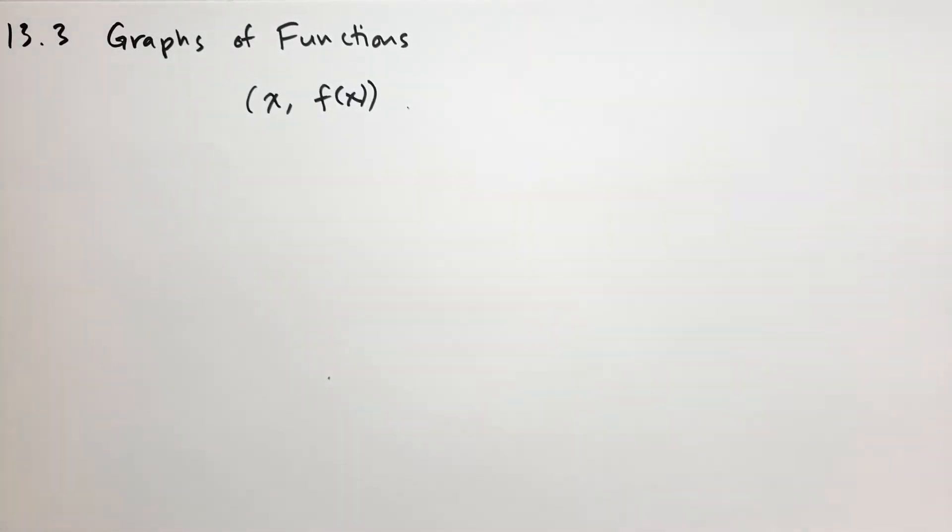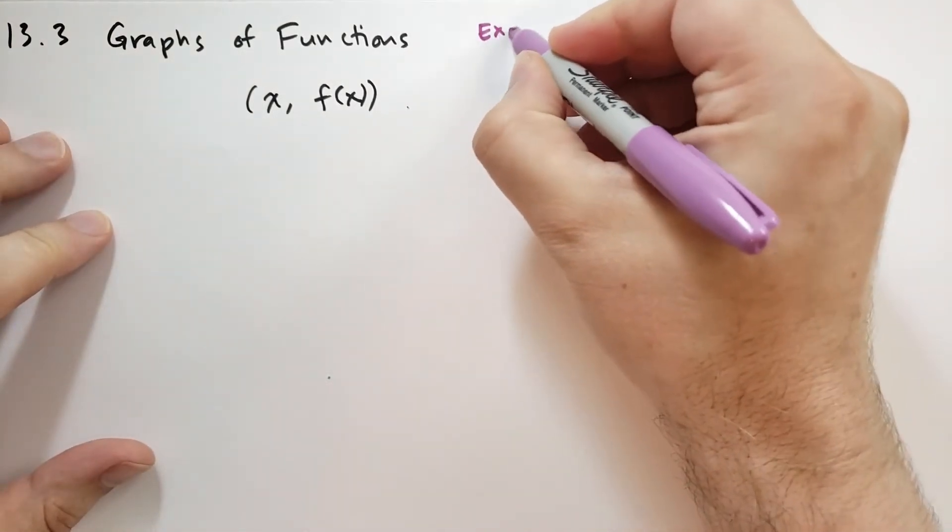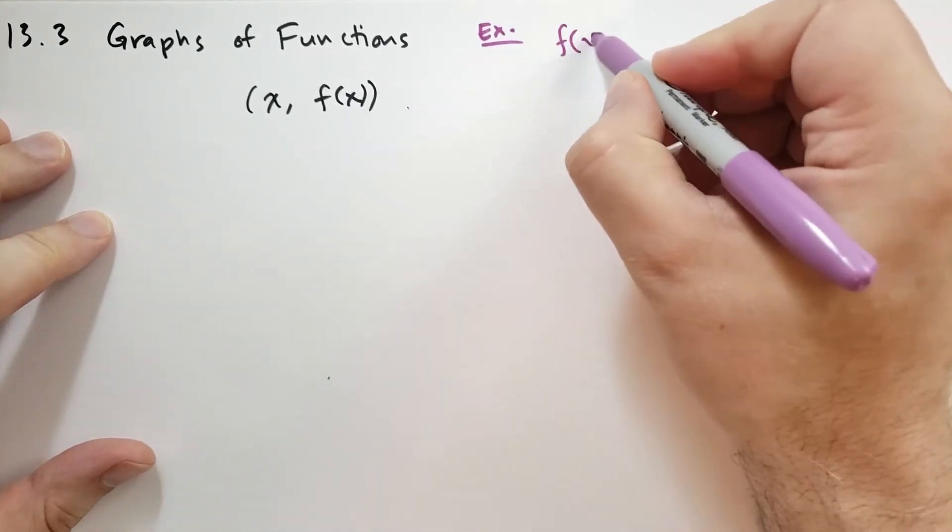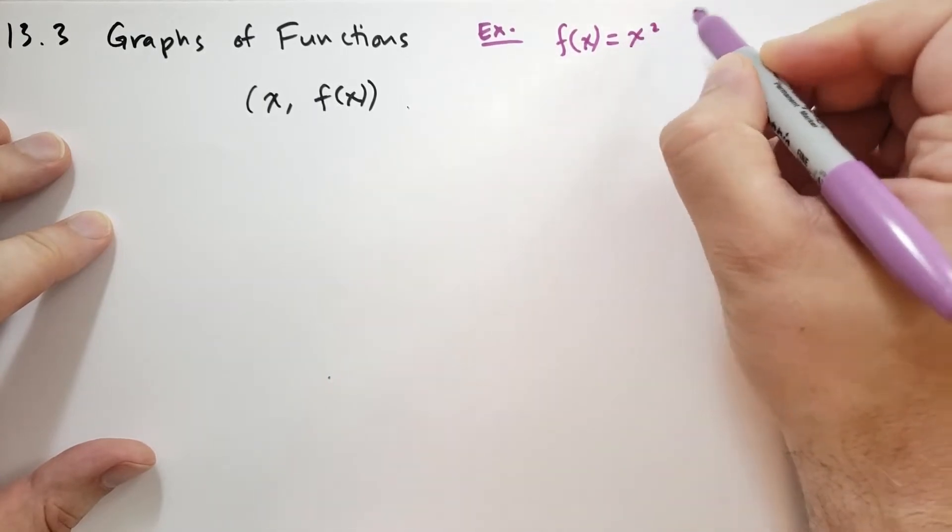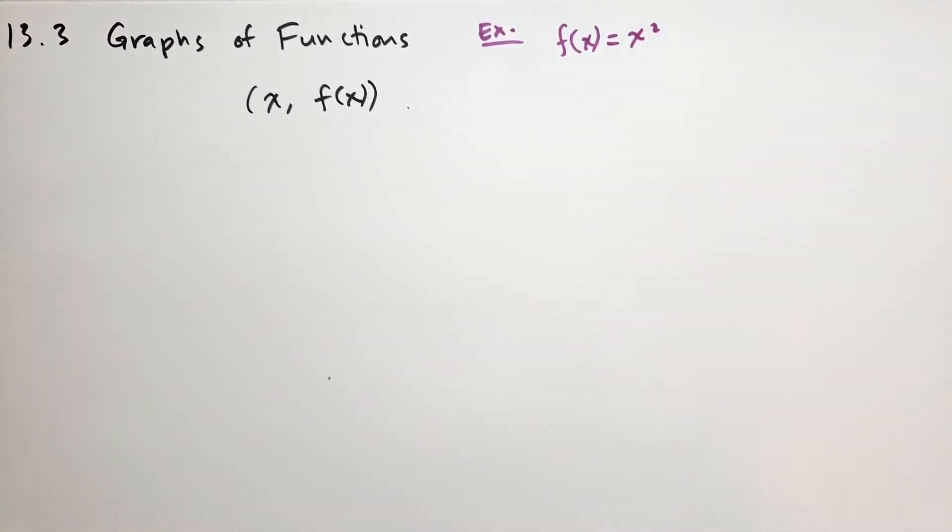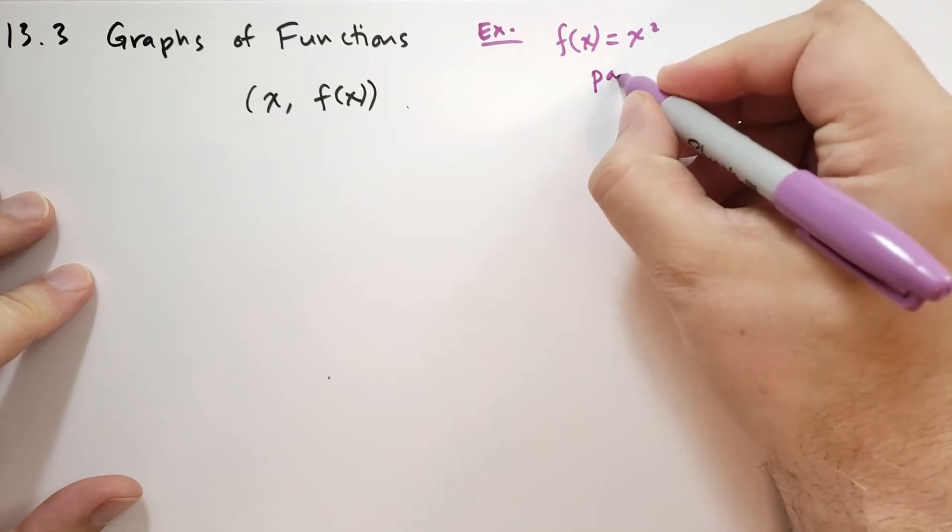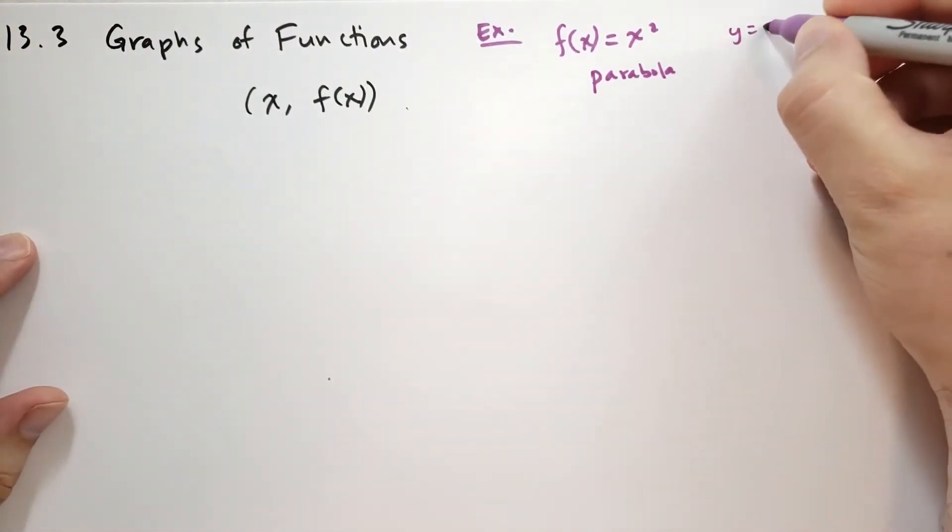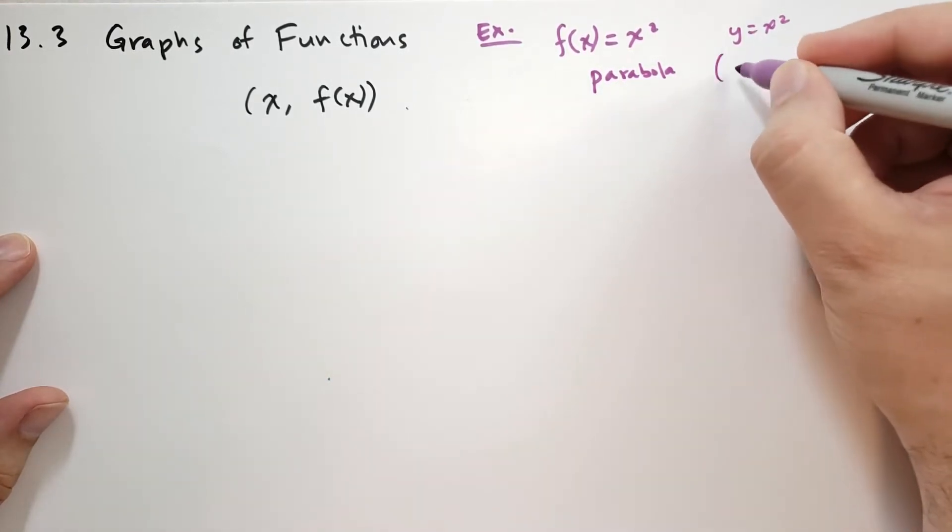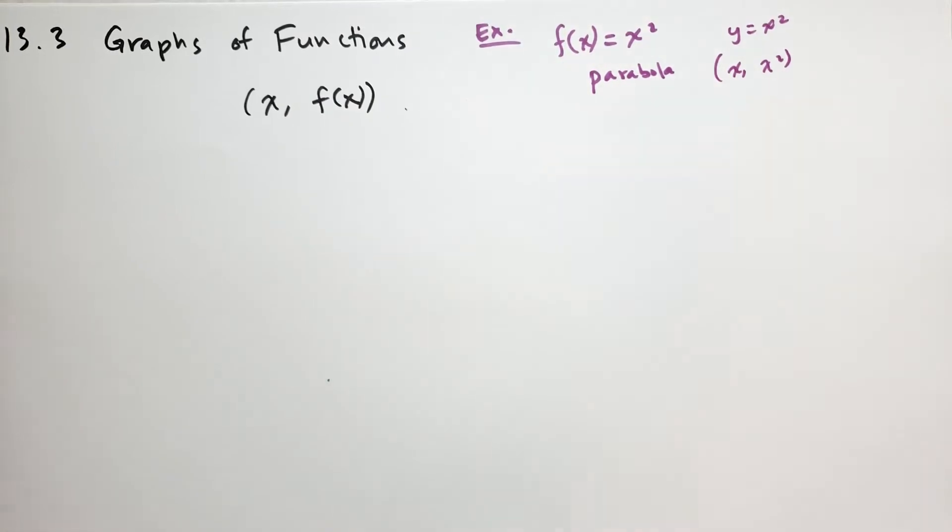So as an example, this hopefully isn't too new for you. Let's say f(x) is the mapping such that the result is x squared. The graph of f is just the parabola. We've seen this before. We've studied this back in chapter 7. You can think about it analytically as the graph of y equals x squared, or as the graph of all points (x, x squared).